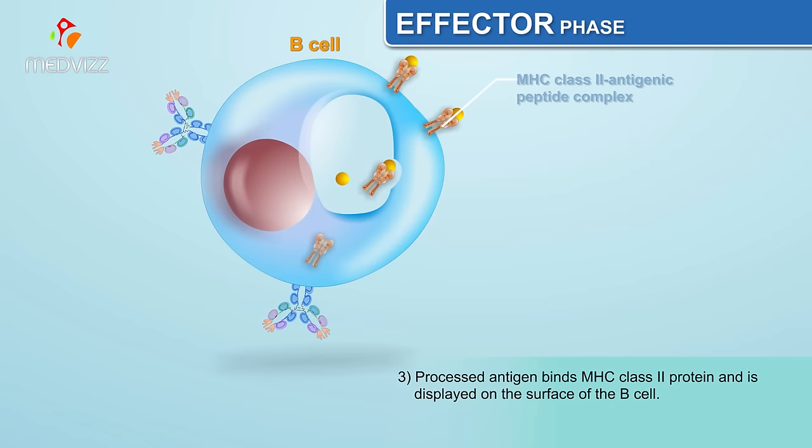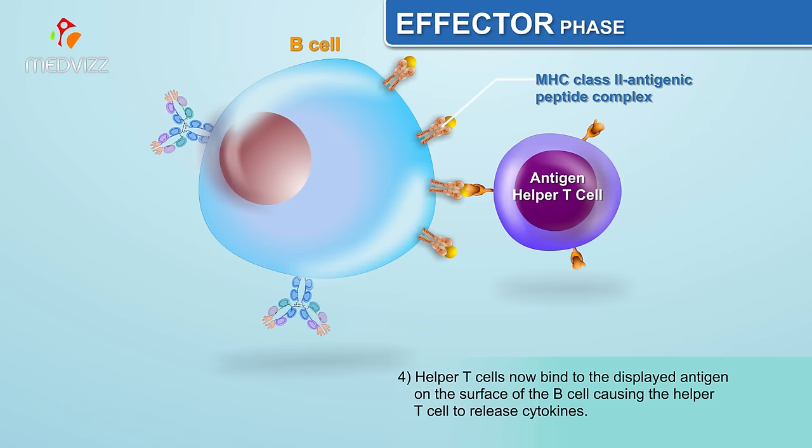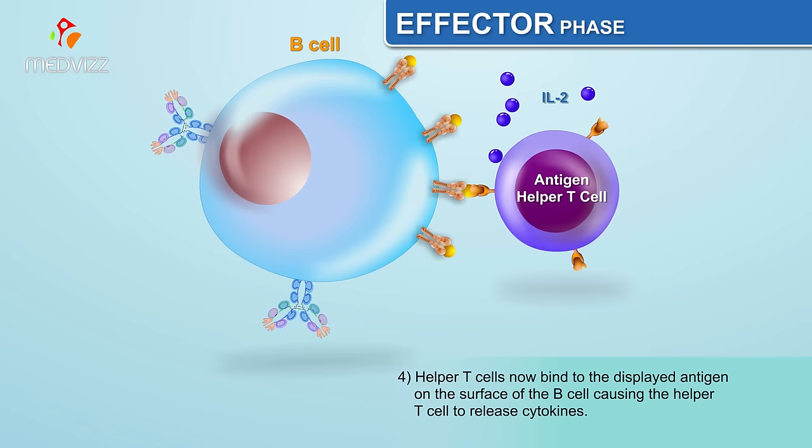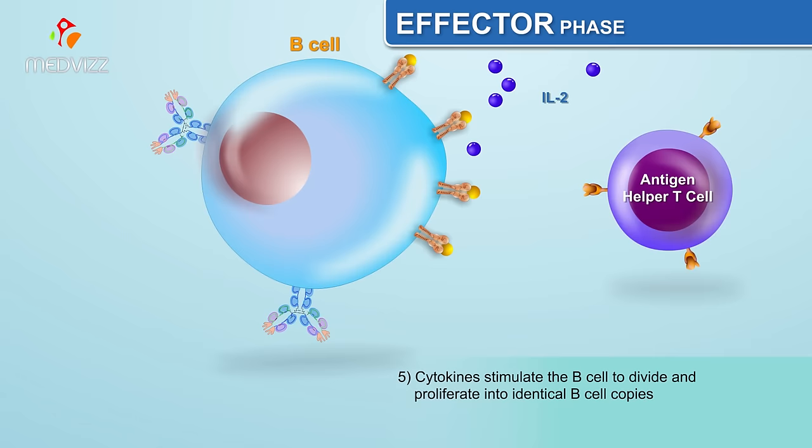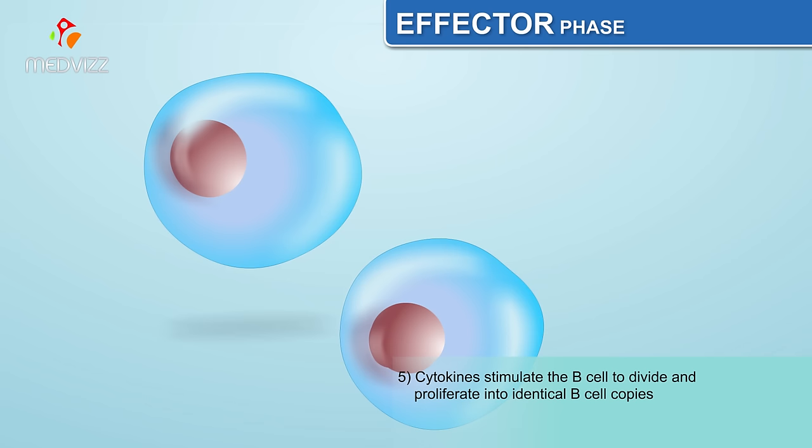Helper T cells now bind to the displayed antigen on the surface of the B cell, causing the helper T cell to release cytokines. The cytokines stimulate the B cell to divide and proliferate into identical B cell copies.